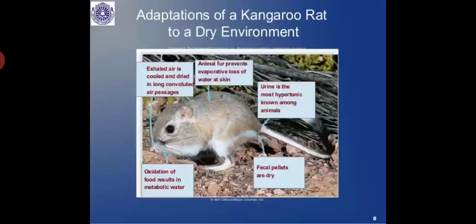These adaptations of the kangaroo rat to a dry desert environment include: exhaled air that is cooled and dried in long convoluted nasal passages; fur that prevents evaporative loss through skin; urine that is the most hypertonic known among animals; very dry fecal pellets; and oxidation of food that results in metabolic water. This is all about osmoregulation in marine fishes and terrestrial animals, including camels and kangaroo rats. With this, the chapter on osmoregulation is completed. Thank you.